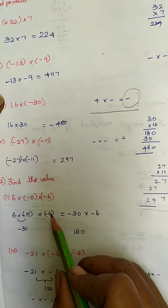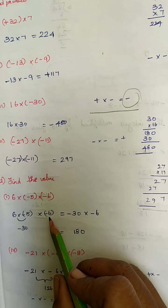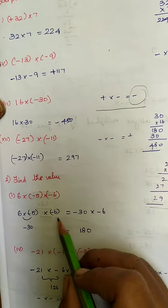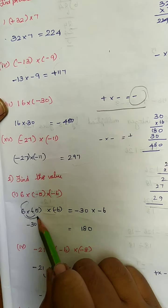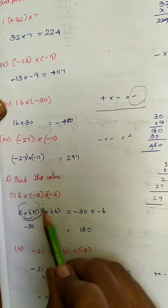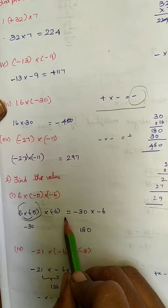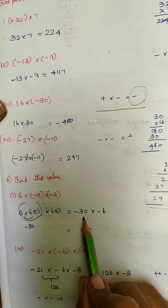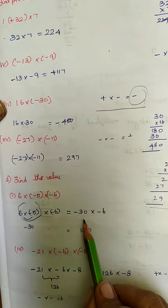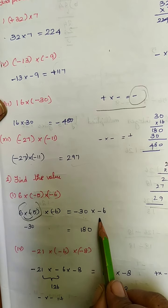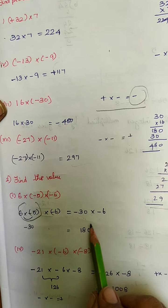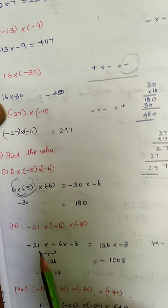Problem number 2 — find the value. The previous problem had two digits; here you have three digits. If you have three digits, multiply the first two numbers first, then multiply that answer with the third number. 6 into 5 is 30. Plus into minus is minus 30. Minus 30 into minus 6: multiplying 30 into 6 is 180. Minus into minus is plus, so plus 180.